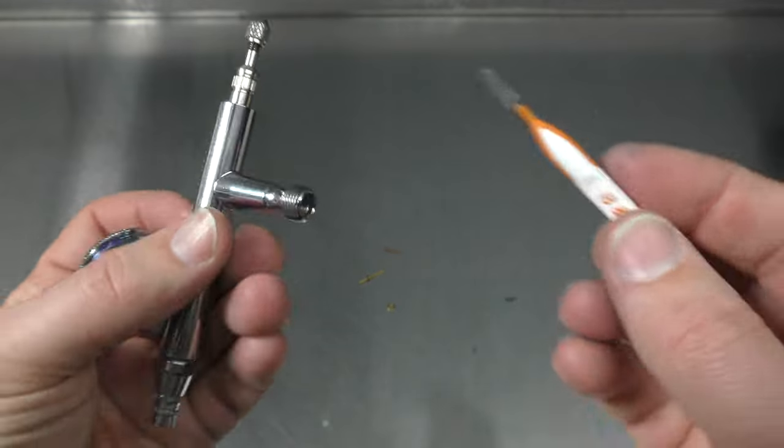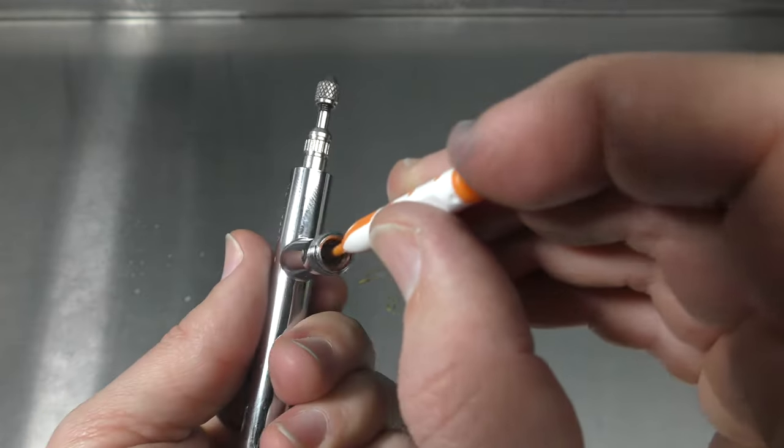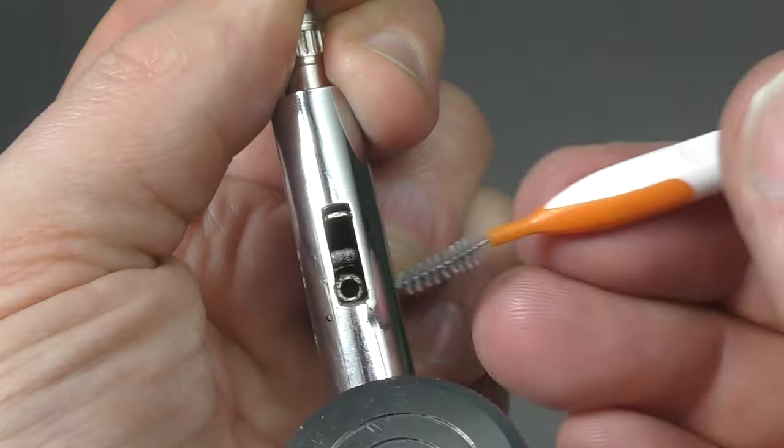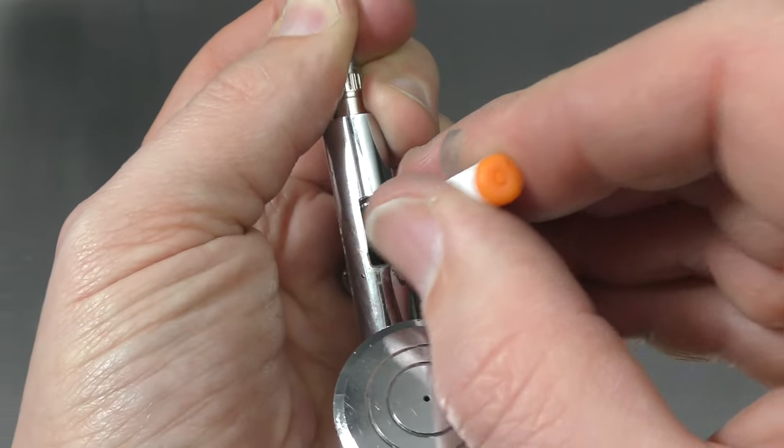With the denture brush, not so much with the cotton bud, I like to get into here and that's because this isn't going to leave any fluff. These also come in the Iwata cleaning kit. I'm just pulling back on that rocker assembly in order to get in there.